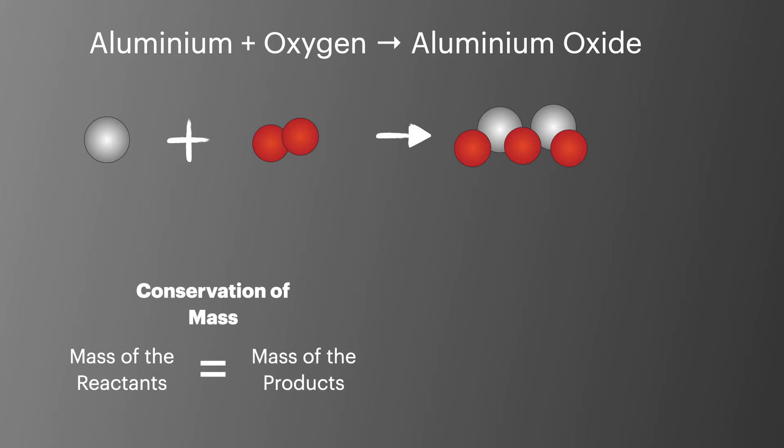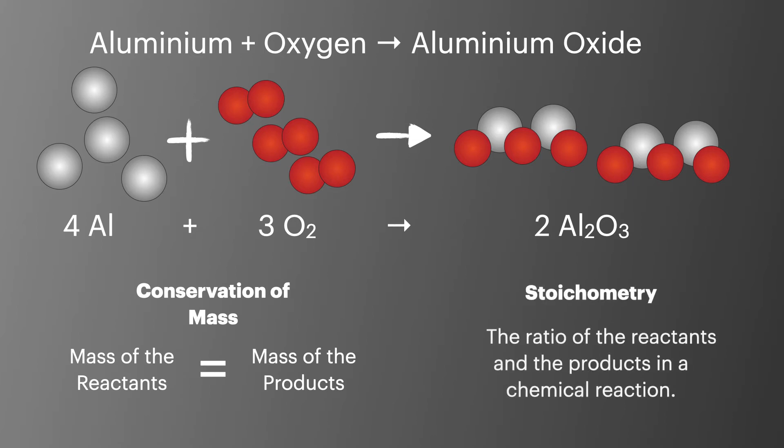So we're going to go back to the equation and balance it, adding in more aluminum, more oxygen, and more aluminum oxide. The equation is now balanced and is represented as 4Al plus 3O2 makes 2Al2O3. This balanced equation displays the stoichiometry, which is the ratio of reactants and products in the chemical reaction. The ratio is important when we try to calculate the amounts of products produced in a reaction or the amounts of reactants required.